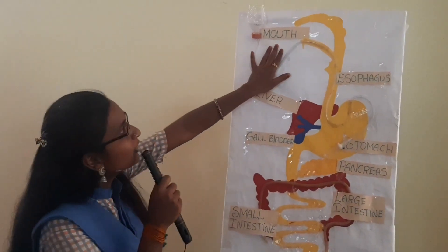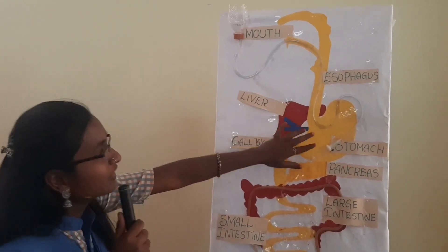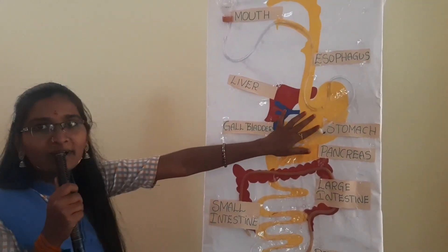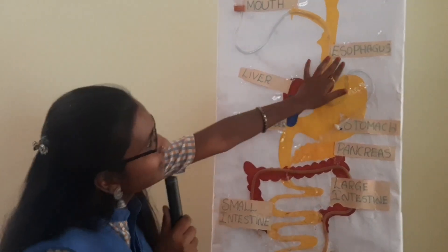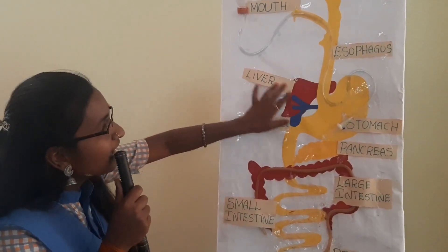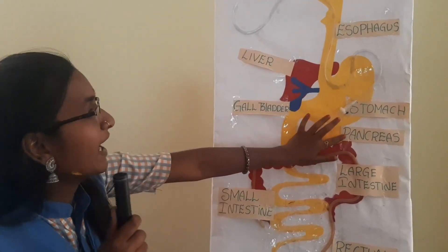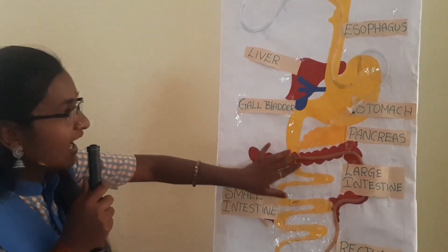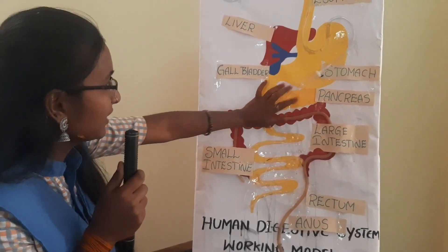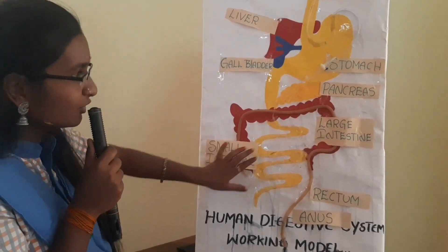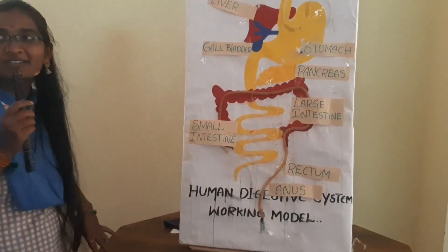Let us observe the human digestive system working model. The alimentary canal is basically a long tube extending from the mouth to the anus. This is the mouth — food and drink enter here and come to the stomach. First there is the esophagus and liver, then coming to the stomach and pancreas, gallbladder, and large intestine. From the stomach, food passes first to the small intestine, then to the large intestine, and finally out through the anus. Thank you.